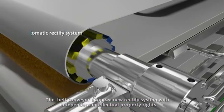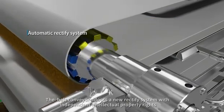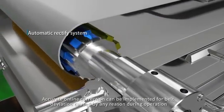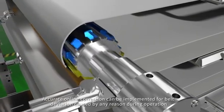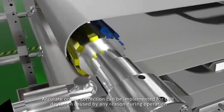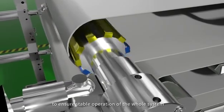The belt conveyor adopts a new rectified system with independent intellectual property rights. Accurate on-line correction can be implemented for belt deviation caused by any reason during operation to ensure stable operation of the whole system.